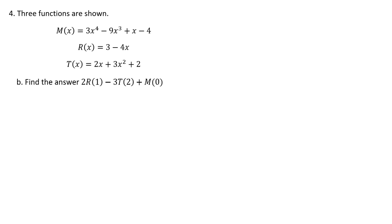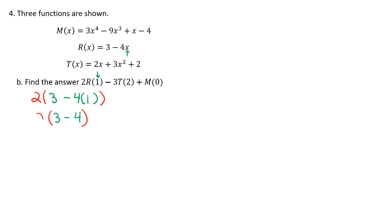Part b for number 4 — same type of problem, but the only real difference is this time they're letting us know what they want x to be. So this is going to follow your order of operations — PEMDAS, if you remember that. Starting off, we have 2 times r where the x for r is 1. So I'll have 2 times r of 1, which is 3 minus 4 times 1. Following order of operations, I'm going to start inside the parentheses and do multiplication first: negative 4 times 1 gives me negative 4. Then 3 take away 4 is negative 1. And then 2 times negative 1 is negative 2.